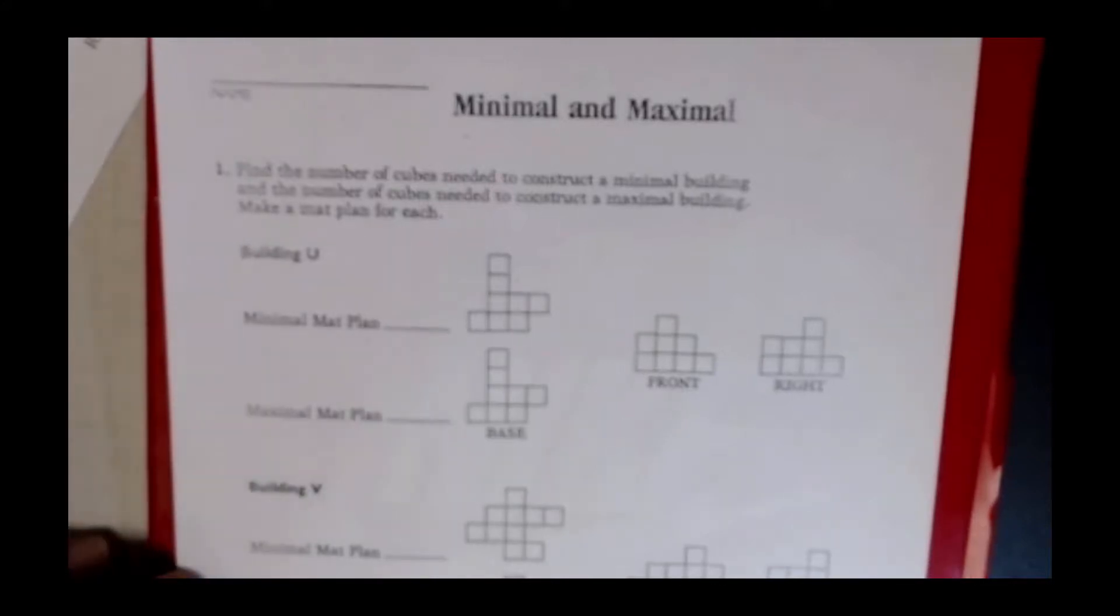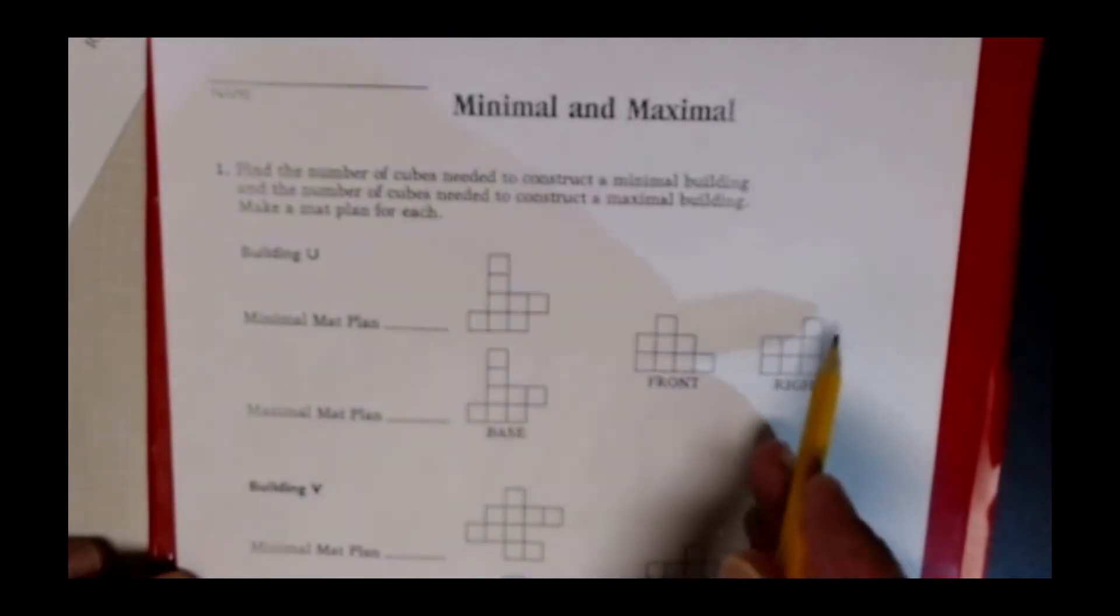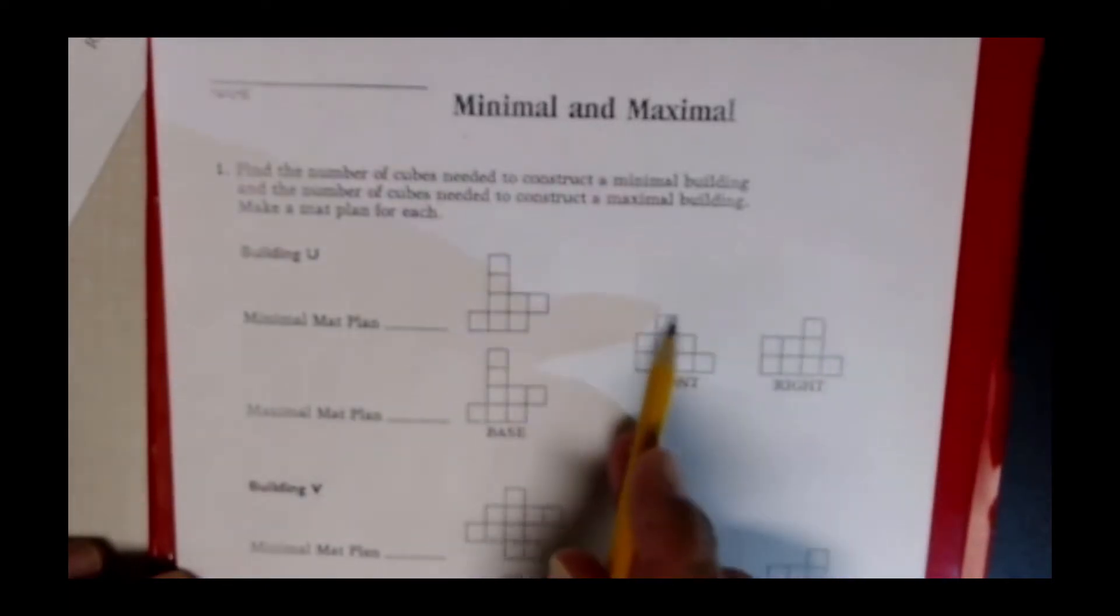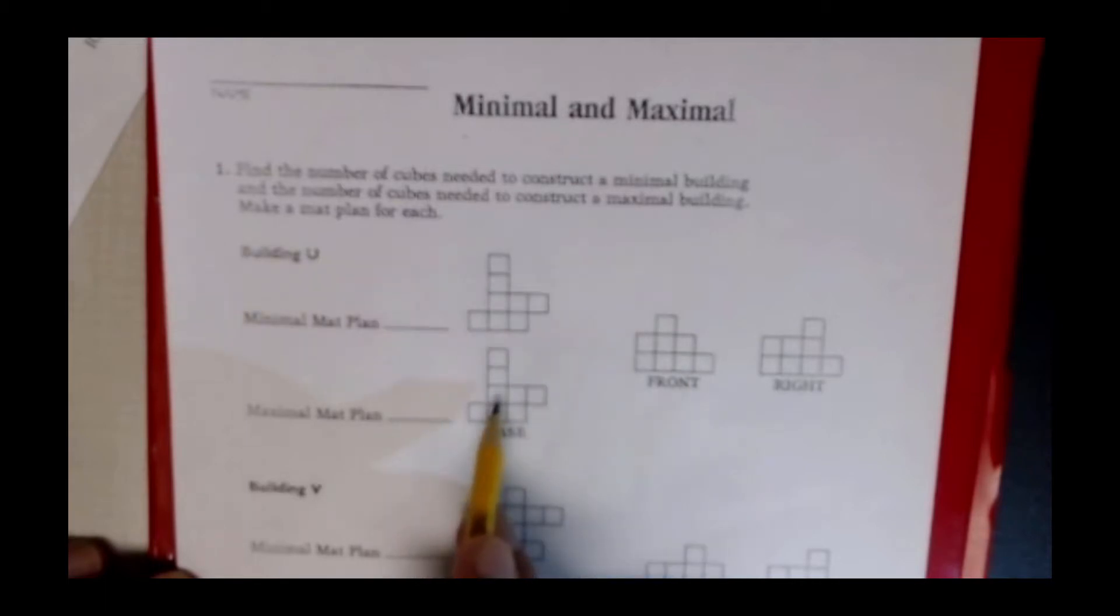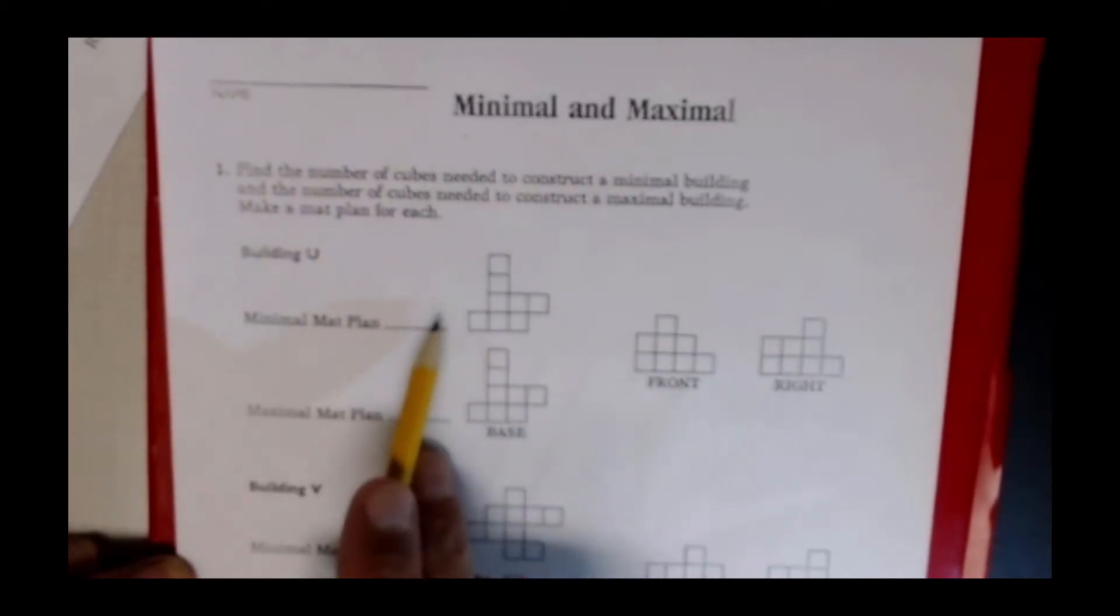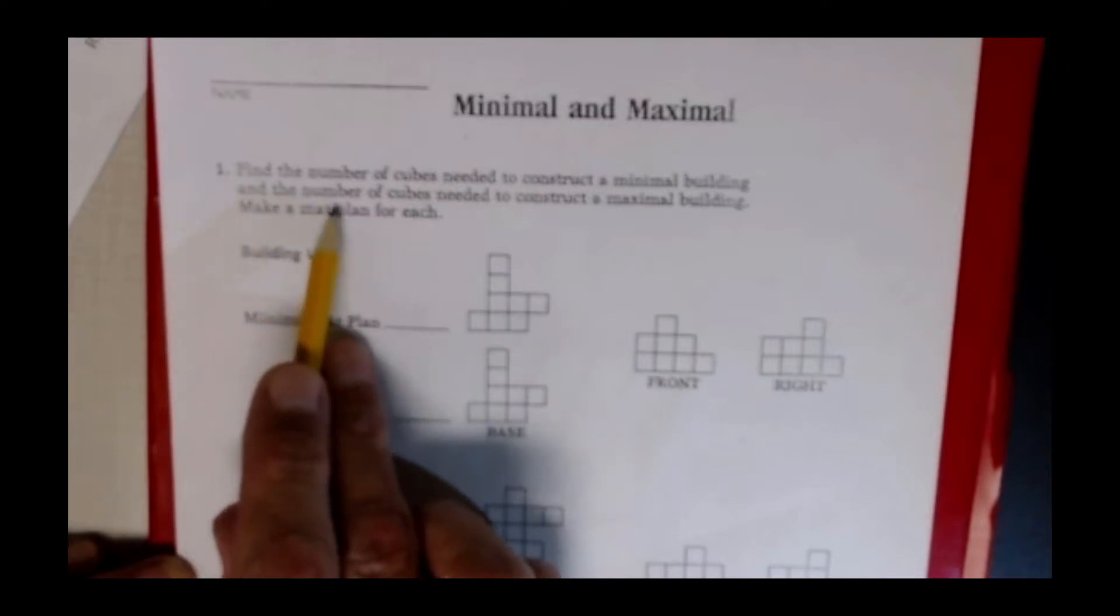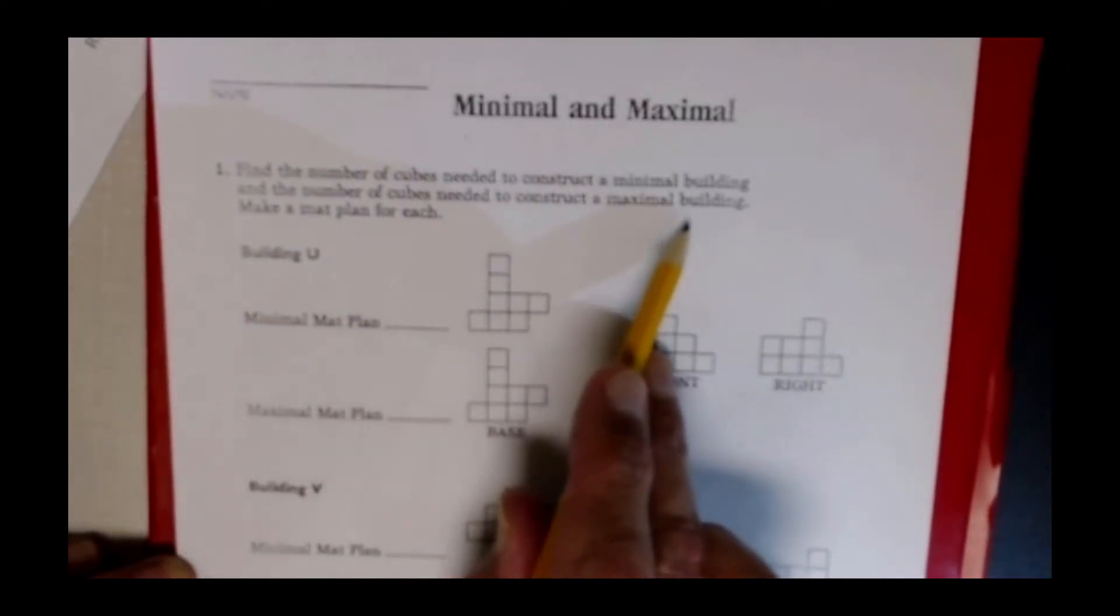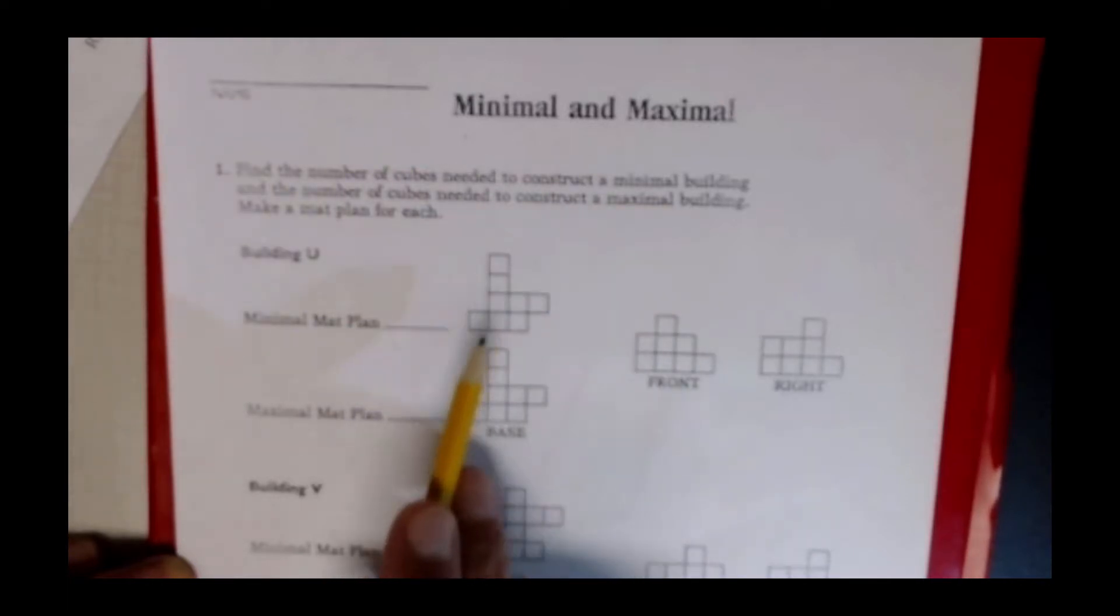It'll probably be easier to read on your handout so please print it out. In this particular situation I have the right-hand view shown, I have the front view shown, and this is the base view or the top view. We're supposed to find the number of cubes needed to construct a minimal building and the number of cubes needed to construct a maximal building and make a map plan for each. So we're going to go ahead and take these base views and put the numbers in it and it'll become a map plan.